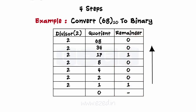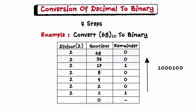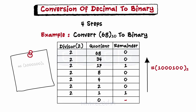We stop here as the number has been reduced to zero, and collect the remainders in reverse order. The answer is read from bottom — MSB (most significant bit) — to top — LSB (least significant bit).